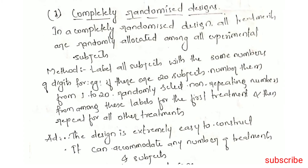Completely Randomised Design: In a completely randomised design, all treatments are randomly allocated among all experimental subjects. The method involves labelling all subjects with numbers — for example, if there are 20 subjects, number them from 1 to 20.